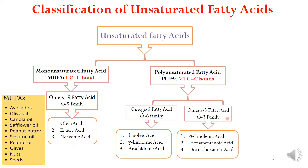The PUFAs are also classified as omega-3 fatty acids, which constitute the omega-3 family. The examples include alpha-linolenic acid, eicosapentaenoic acid, and docosahexaenoic acid. So you can see that the polyunsaturated fatty acids have two subclassifications: the omega-6 family and the omega-3 family.